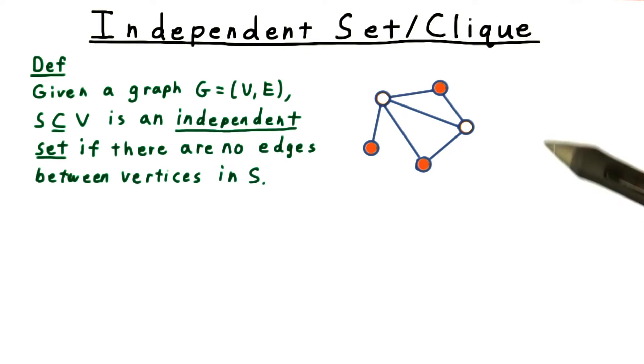Clearly, each individual vertex forms an independent set since there isn't another vertex in the set for it to have an edge with. And the more vertices we add, the harder it is to find new ones to add. So, finding a maximum independent set is the interesting question.